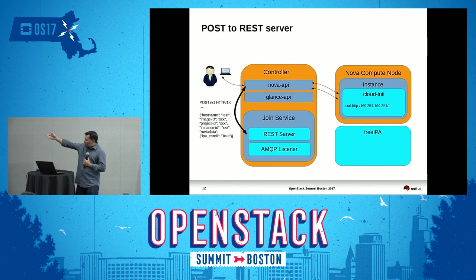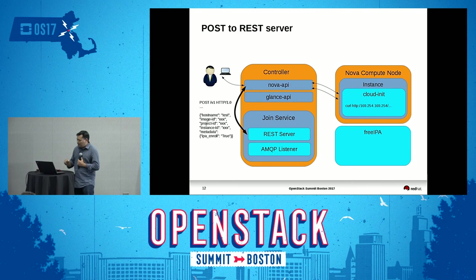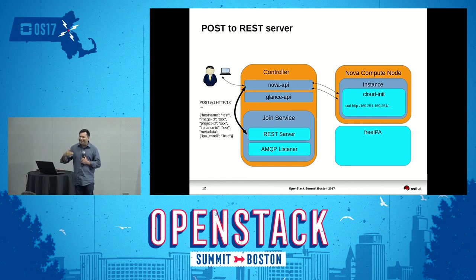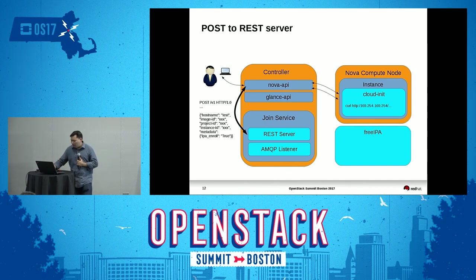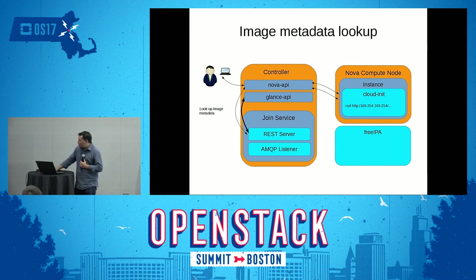That triggers a REST call to the NovaJoin service on the REST side, and it's basically going to send a JSON with a bunch of UUIDs and the instance name. One of the other things that could be inside there, for example, could be a list of services to be created in IPA — things like HTTPD, HAProxy, or MySQL. All of those services need to have certificates in order for them to be TLS-enabled. So all of that gets sent over to the NovaJoin service.